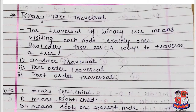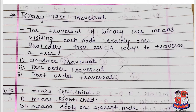Today I am going to teach a new concept: the binary tree. The new concept is binary tree traversal. The traversal of a binary tree means visiting each node exactly once. Basically, there are three main ways to traverse a tree: in-order traversal, pre-order traversal, and post-order traversal.